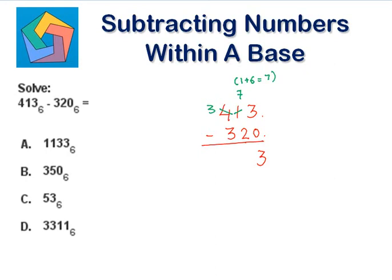So 7 minus 2 is 5, and 3 minus 3 is 0. So this is 53 to the base 6. Which is the answer in the C part.